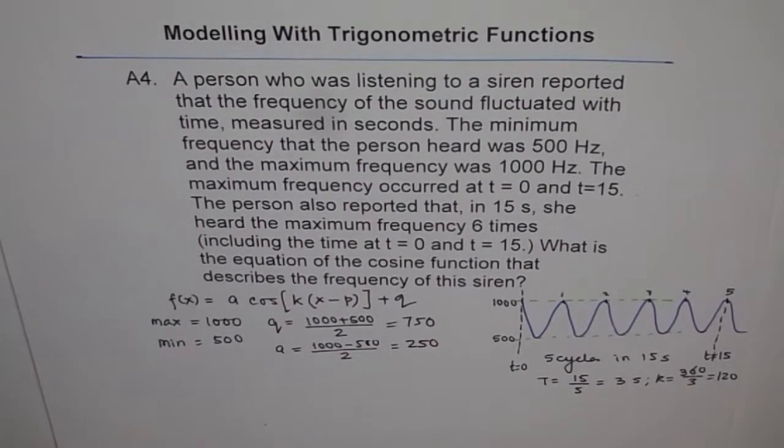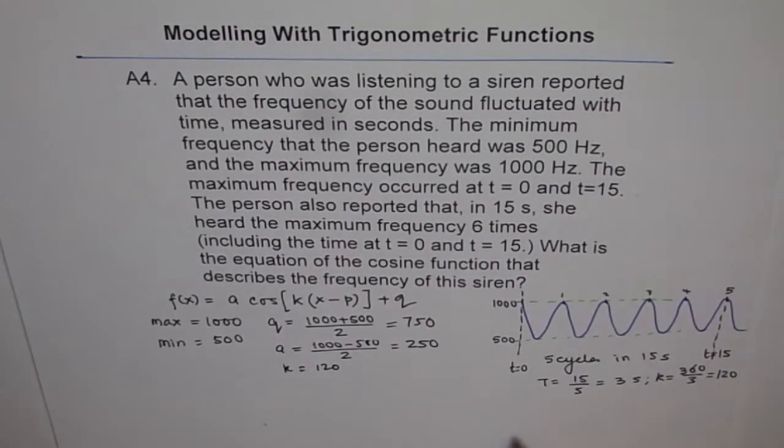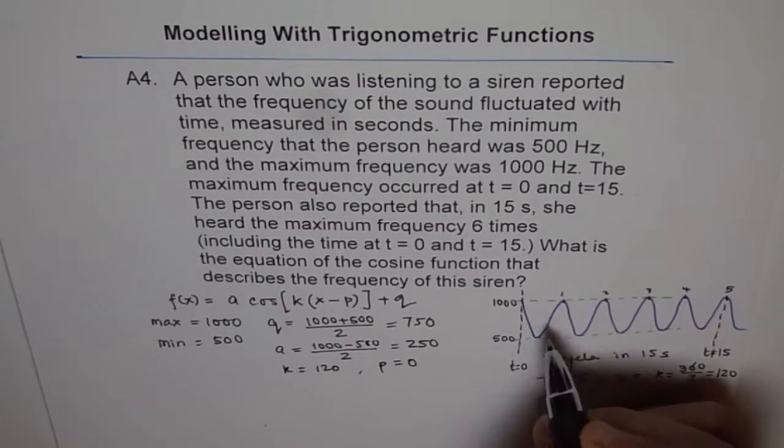Now what is the phase shift? Since it is starting from a maximum, phase shift is 0 for us, for the cosine function. For sine function, we will have phase shift. Now we know a, k, and from, we know q and a, and from the frequency, I mean from the time period, we calculate the value of k as 360 divided by 3, so which is 120. So k is 120 for us, therefore we can write down this equation now, and what is p? p is 0 for us, since it starts with maximum.